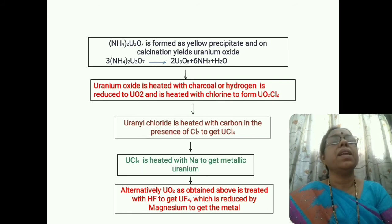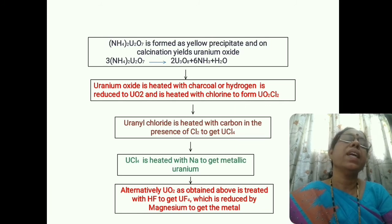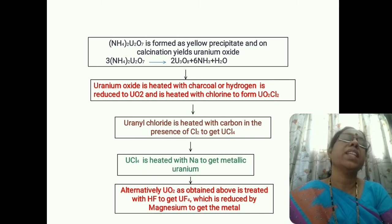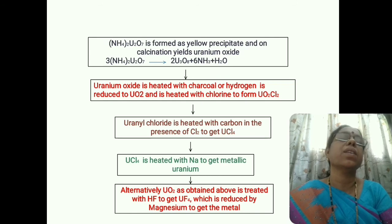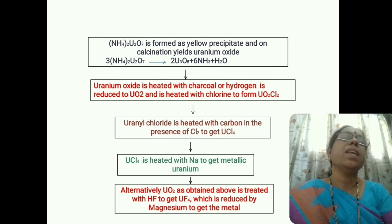This is a method to get pure uranium. Alternatively, instead of using chlorine, uranium dioxide obtained in the above process can be treated with hydrofluoric acid to get uranium tetrafluoride (UF₄), which is then reduced by magnesium to get the metal. So either way — by treating with chlorine or by treating with hydrofluoric acid — we can obtain uranium tetrachloride or uranium tetrafluoride, which is further reduced to give uranium metal.